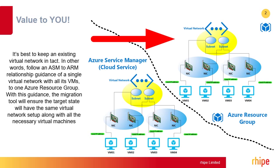With this guidance, the migration tool will ensure the target state will have the same virtual network set up along with all the necessary virtual machines. The tool takes into consideration everything for the source virtual machine: multiple NICs, both OS and data disks, VM extensions, ACL endpoints, load balancer, and load balancer rules.